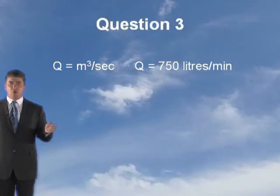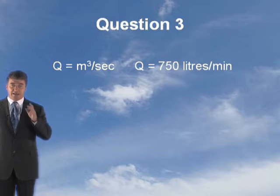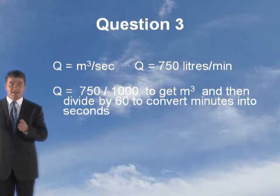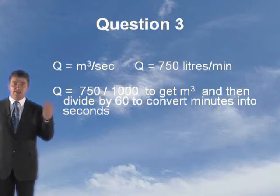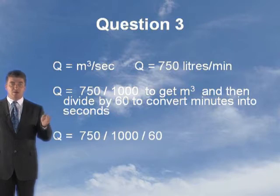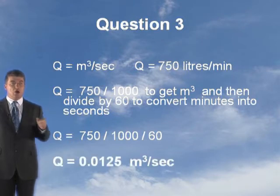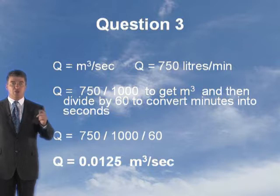Now first of all, let's determine the velocity energy at point A. Don't forget you've got to convert to SI units straight away. Now Q is metres cubed a second, and in this case, it's quoted in 750 litres a minute. So you've got to convert it. Q equals 750, you divide it by 1,000 to get metres cubed, and then divide it by 60 to convert to metres a second. So Q in metres cubed per second is 0.0125. That's what we need, Q.